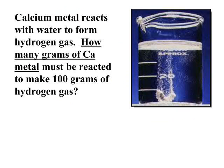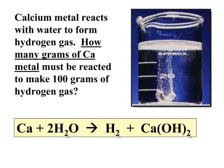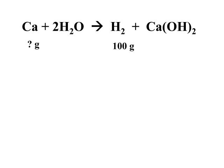Let's look at another reaction. We have a word problem: calcium metal reacts with water to form hydrogen gas. How many grams of calcium will we need to make 100 grams of hydrogen gas? Before we can do any stoichiometry, we need to write a balanced equation. Calcium reacts with water to produce hydrogen gas and calcium hydroxide. Even though we're only interested in hydrogen gas, we need to write a completely balanced equation including all reactants and products. Once we have our balanced equation, it's helpful to clarify: we have 100 grams of hydrogen that we're trying to produce, and we want to know how many grams of calcium we'll need.